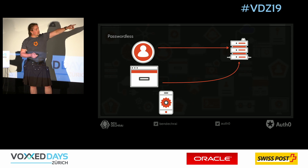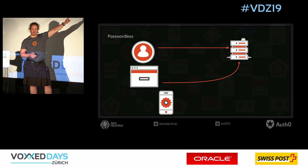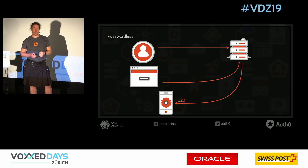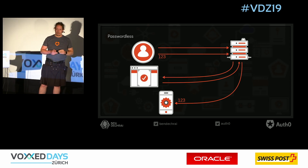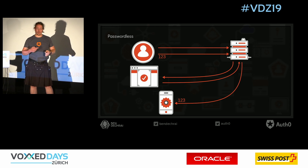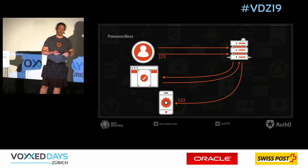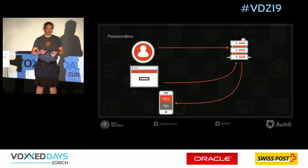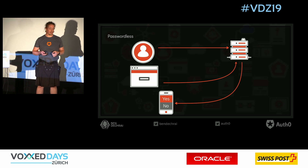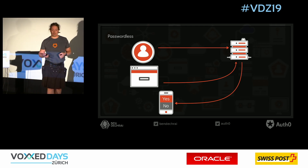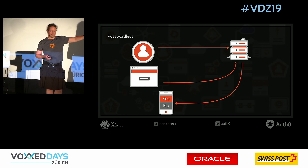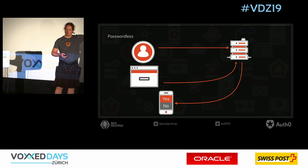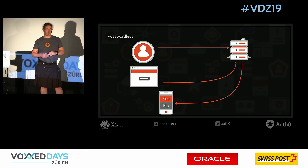If we take that model and take the database out and just provide a login form that only requires you to put in a mobile number, for example, then we can send a code directly to the phone and the user can supply that code and then they're logged in. In this case, there's no password. The way we know who they are is the fact that they were able to receive a code on their phone. You could also do that by email. Or another way would be through some kind of mobile app integration where you use push notifications to push a message out to a known login.